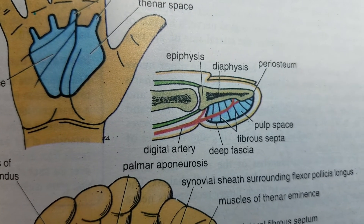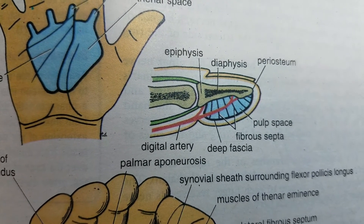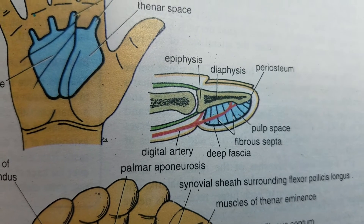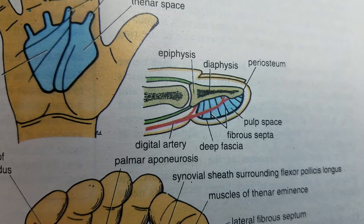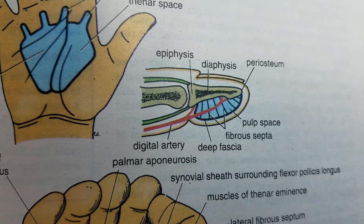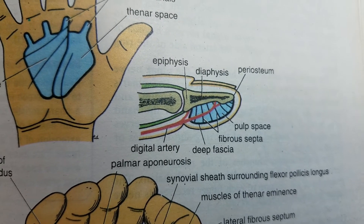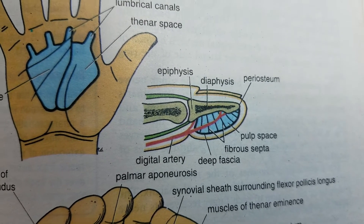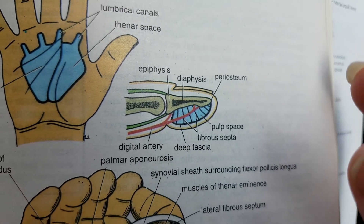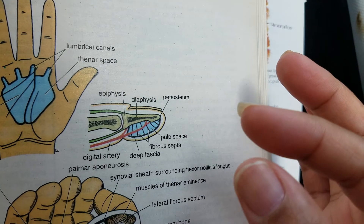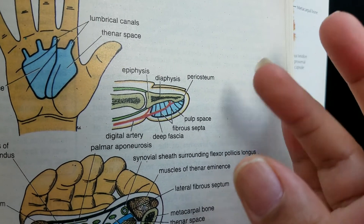Bismillahirrahmanirrahim. Today we'll be discussing the pulp spaces. The pulp spaces are potential spaces in the pulps of your fingers. So these here are the pulps of your fingers.